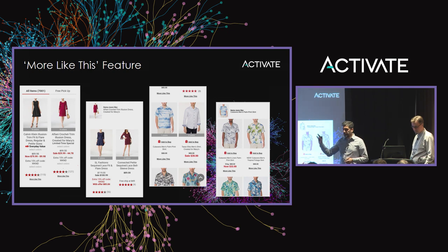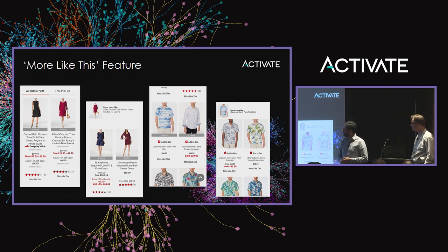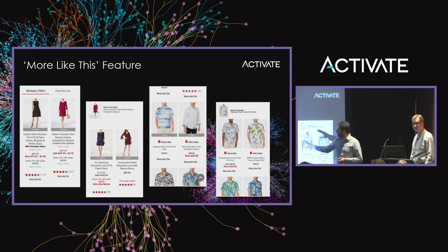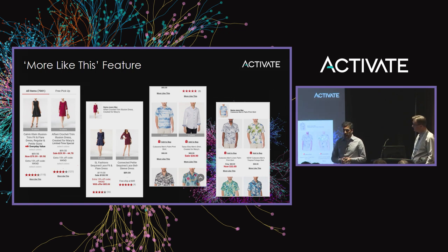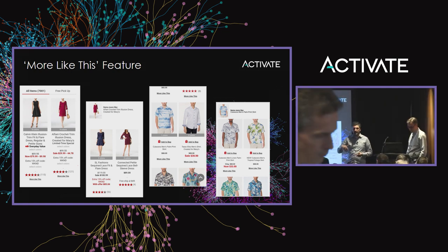What we're going to focus on today is the visual similarity feature. The user experience is simple: when a customer searches or navigates a category, they can click a small link under the product thumbnail that says 'more like this' and be navigated to a page where similar images are presented. Each image on that page could also have a 'more like this' link, and so on.